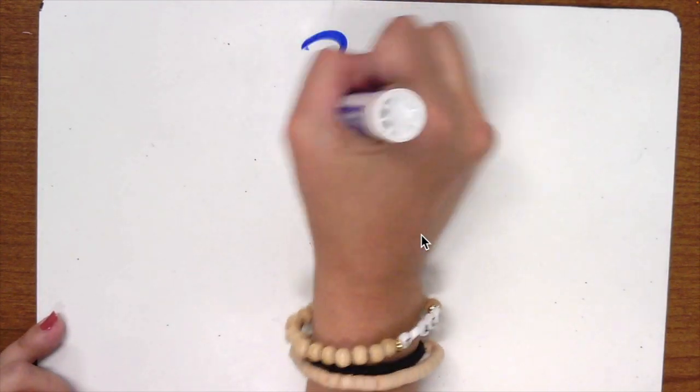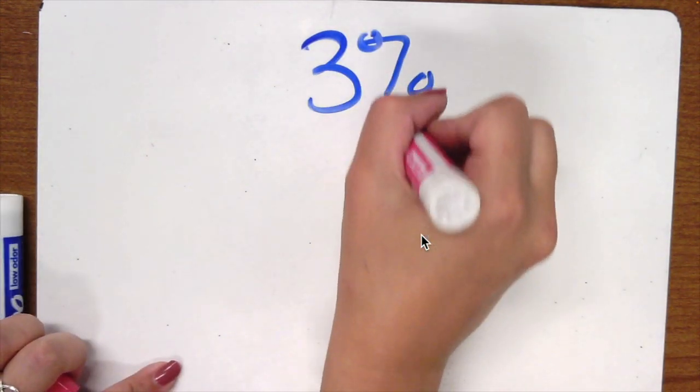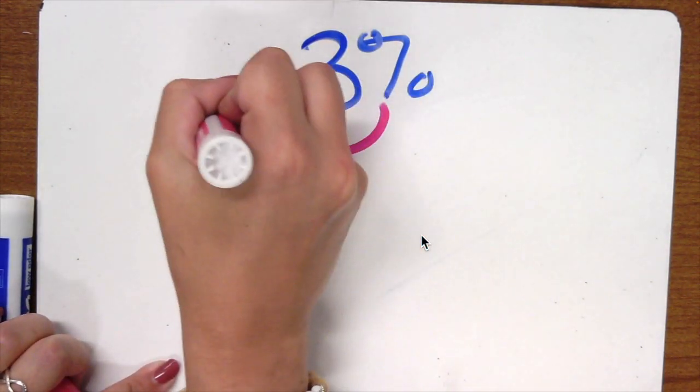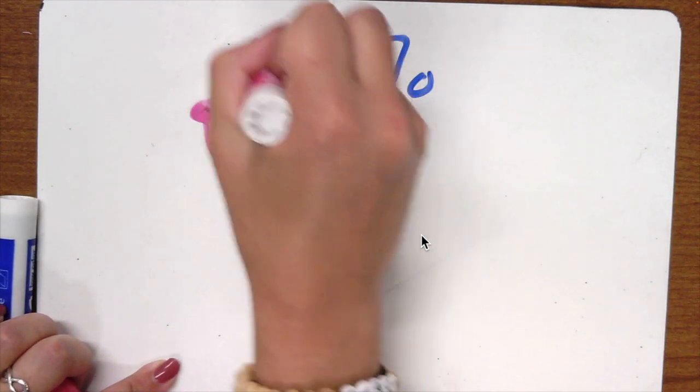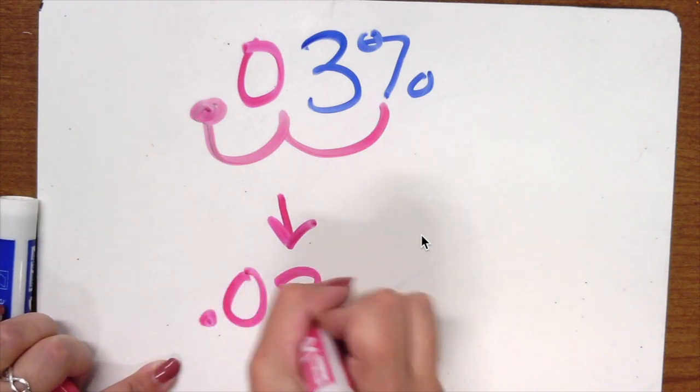But what if I have a number like three percent? Well, I would still start at the percent, jump one, jump two, add your decimal, but I don't have a number right here so I need to add a zero meaning our decimal is going to be point zero three.